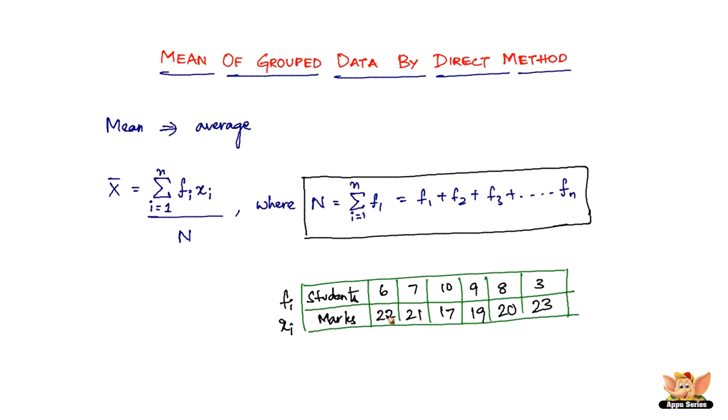So that's how you find the mean. You multiply 22 times 6 and 21 times 7, 17 times 10, and you add them all up and divide by the sum of all the frequencies. So that's how you find the mean.